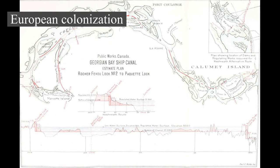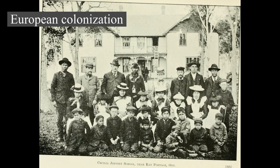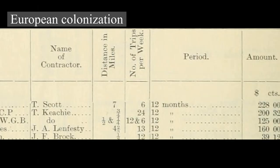In 1583, Sir Humphrey Gilbert, by the royal prerogative of Queen Elizabeth I, founded St. John's, Newfoundland, as the first North American English seasonal camp. In 1600, the French established their first seasonal trading post at Tadoussac along the St. Lawrence. French explorer Samuel de Champlain arrived in 1603 and established the first permanent year-round European settlements at Port Royal in 1605 and Quebec City in 1608. Among the colonists of New France, Canadians extensively settled the St. Lawrence River Valley and Acadians settled the present-day Maritimes, while fur traders and Catholic missionaries explored the Great Lakes, Hudson Bay, and the Mississippi watershed to Louisiana.